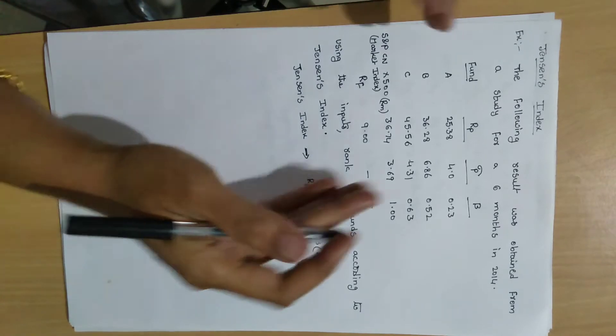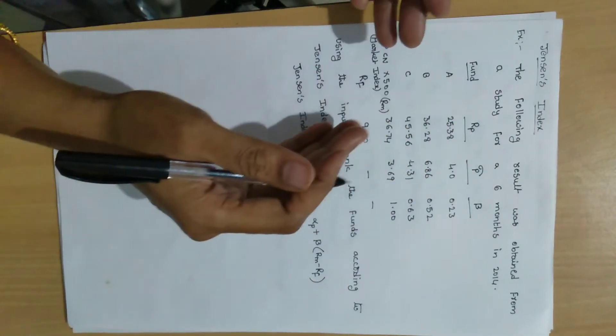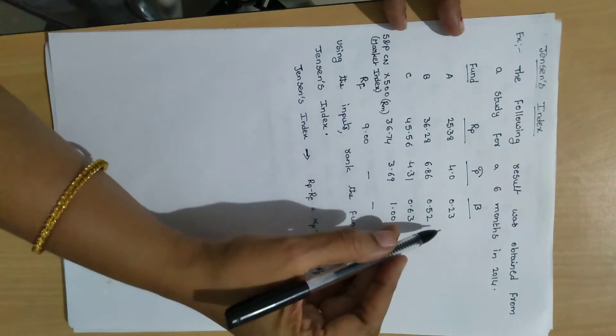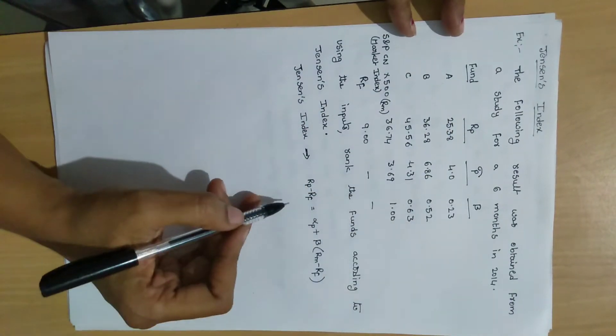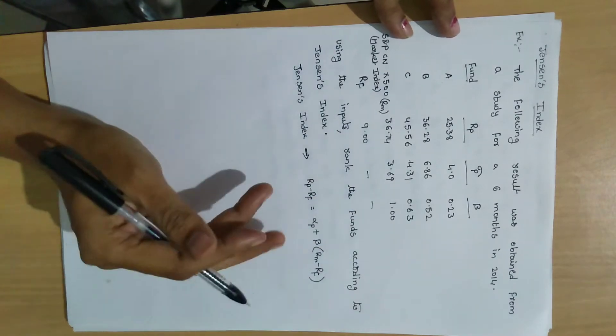RP minus RF equal to alpha P plus beta into RM minus RF. This is the equation to calculate Jensen's index. First we have to calculate each fund, we have to calculate the alpha values.